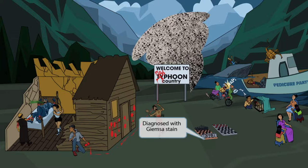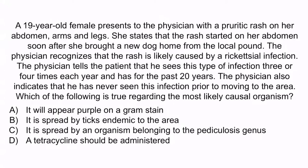Now that we've covered the items in the image, let's do a question to apply this. A 19-year-old female presents to the physician with a pruritic rash on her abdomen, arms, and legs. She states that the rash started on her abdomen soon after she brought a new dog home from the local pound. The physician recognizes that the rash is likely caused by a rickettsial infection. The physician tells the patient that he sees this type of infection three or four times each year and has for the past 20 years, and has never seen this infection prior to moving to this area. Which of the following is true regarding the most likely causal organism? A: it will appear purple on a gram stain. B: it is spread by ticks endemic to the area. C: it is spread by an organism belonging to the pediculosis genus. Or D: a tetracycline should be administered.